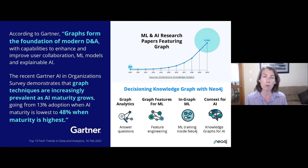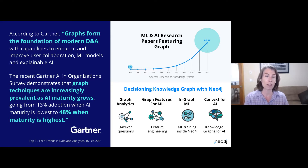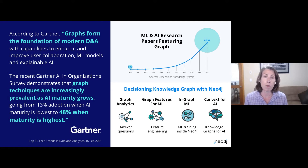Not just in research — we're also seeing this in the commercial space. Gartner is saying that graphs form the foundation of modern data and analytics, and that where graph techniques are prevalent, AI maturity is prevalent as well. At its highest, when AI maturity is highest with teams, 48% are using graph techniques. And so Neo4j, looking at the trend in research and in commercial space, and quite frankly our community asking us, have developed ways to support machine learning and AI with decisioning knowledge graphs. There are really four areas that we support.